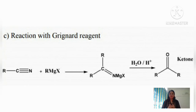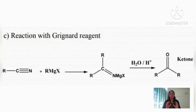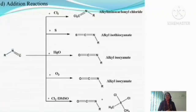When cyanide compounds react with Grignard reagent (RMgX), the R group acts as a nucleophile and the MgX part becomes positive. The alkyl group attaches to the carbon, and the electronegative nitrogen coordinates with magnesium, forming an addition product. This intermediate undergoes hydrolysis to give a ketone as the final product.